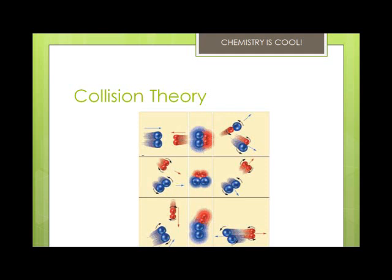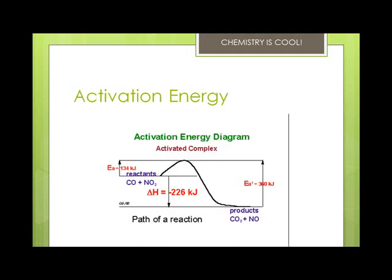In order to react, molecules and atoms have to touch each other. They have to hit each other hard enough in order to make the bonds break. Anything that increases how often and how hard the molecules and atoms hit each other will make the reaction happen faster. The activation energy is the minimum energy needed to make the reaction happen. If the activation energy needed is low, then lots of the collisions are already hard enough and reactions happen fast. If the activation energy needed is high, then few of the collisions are hard enough and the reactions happen slowly.